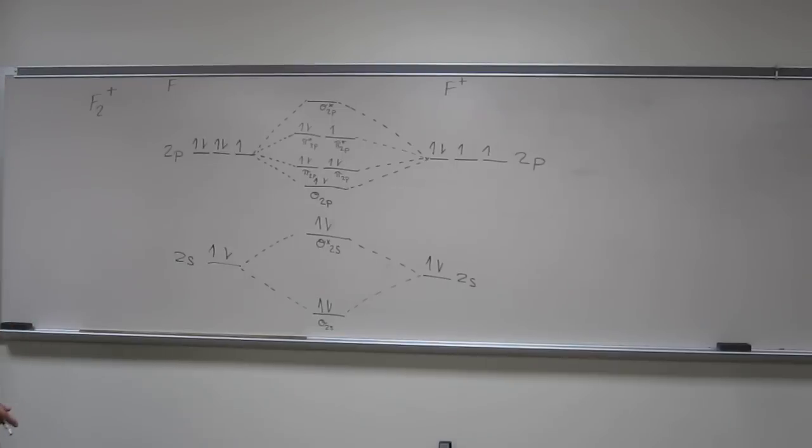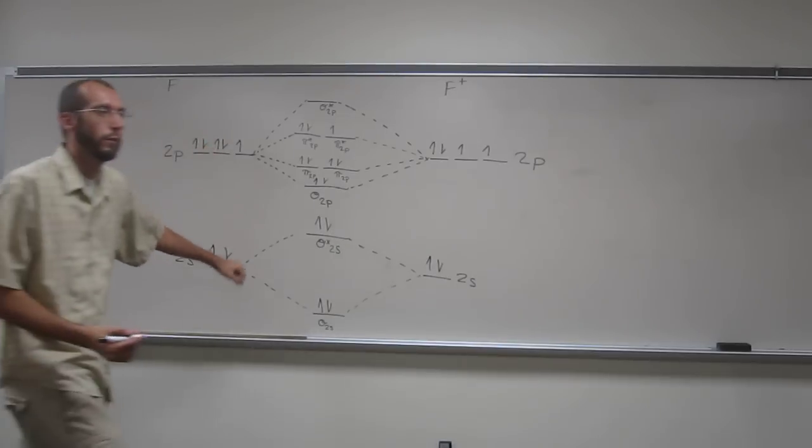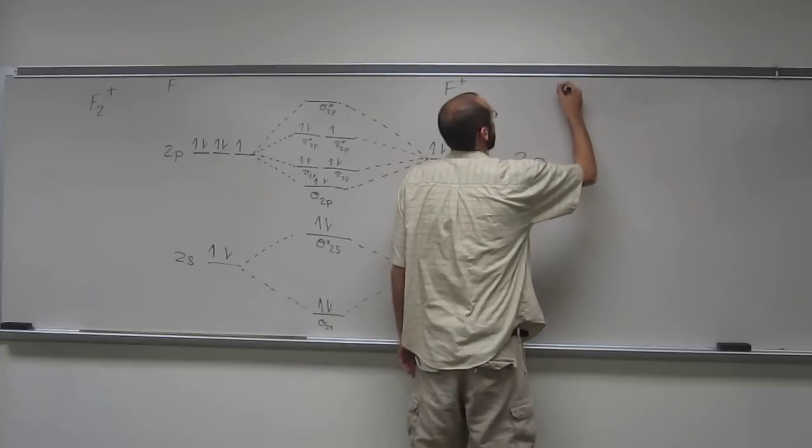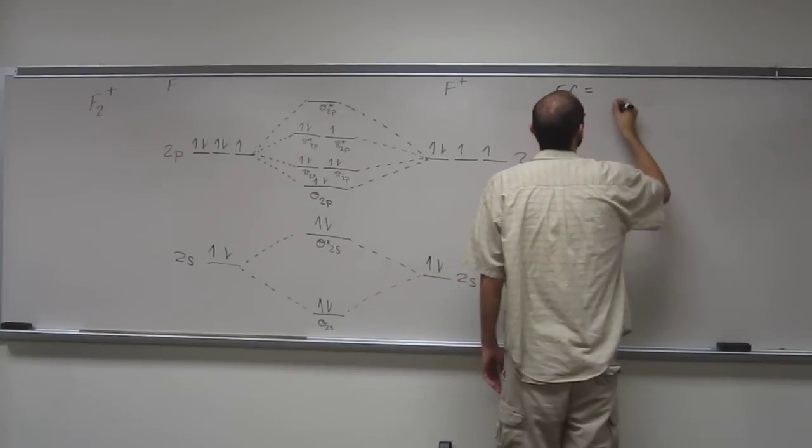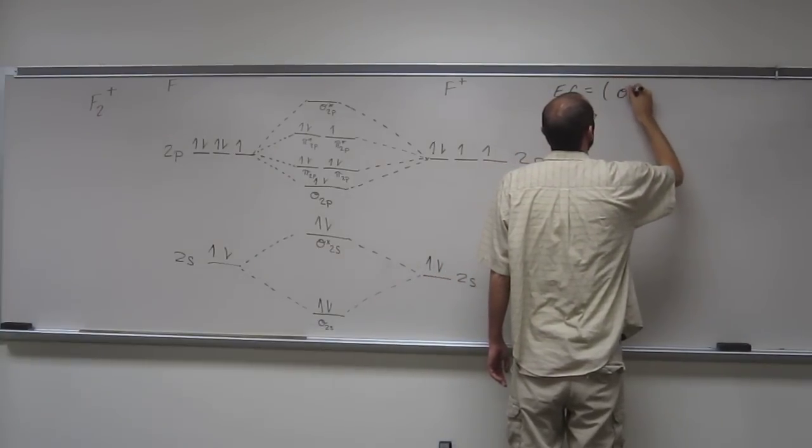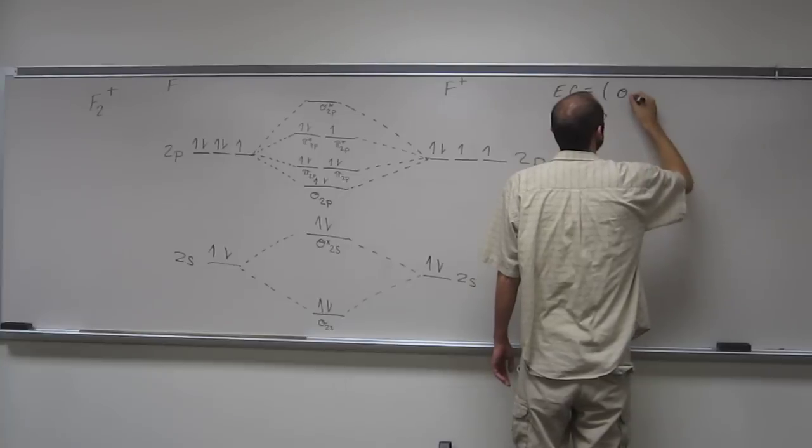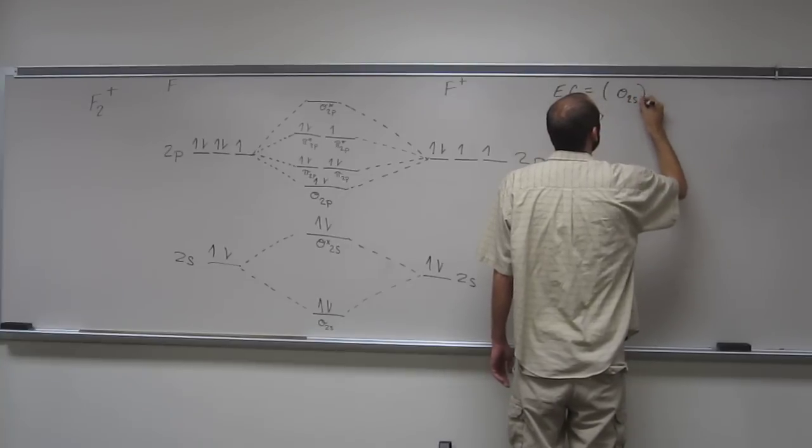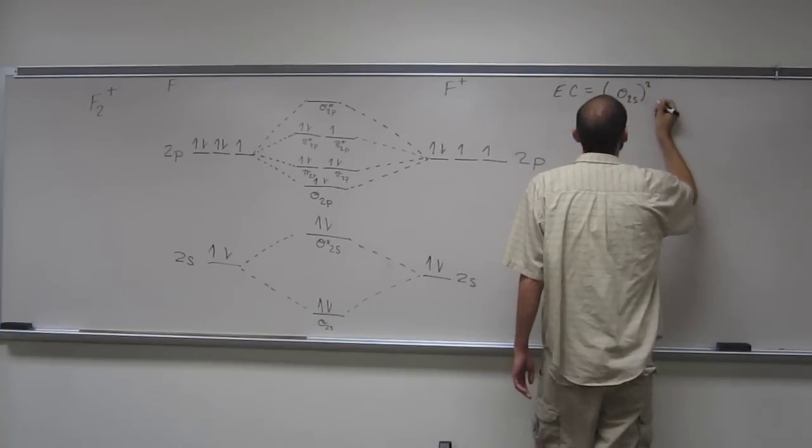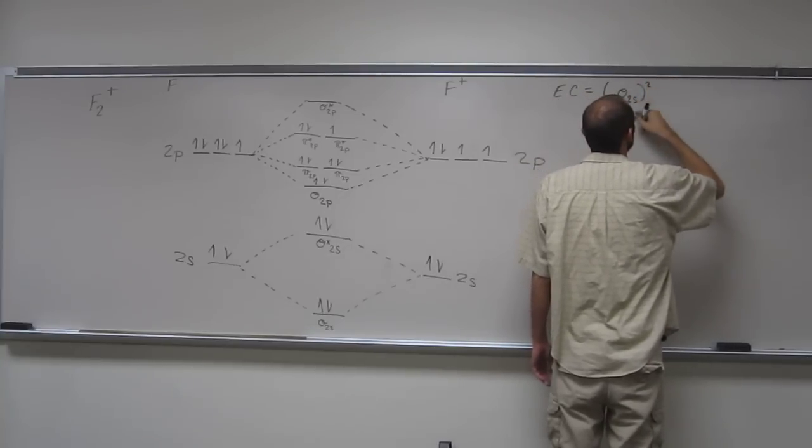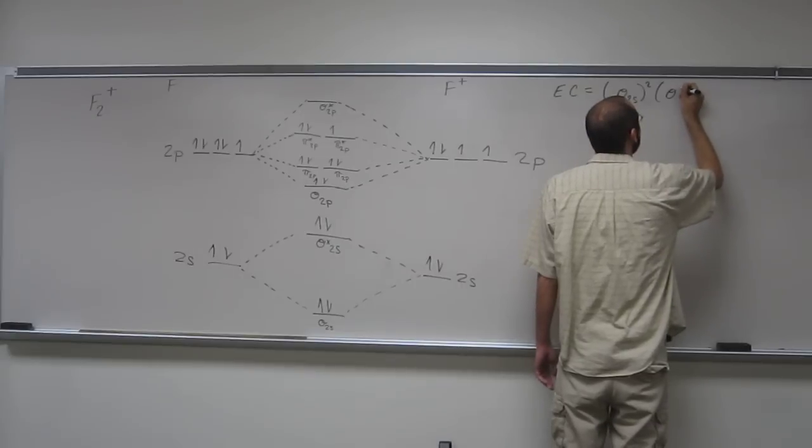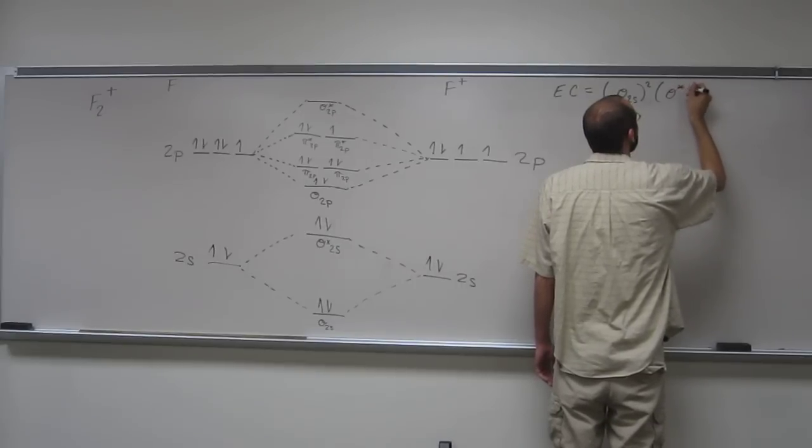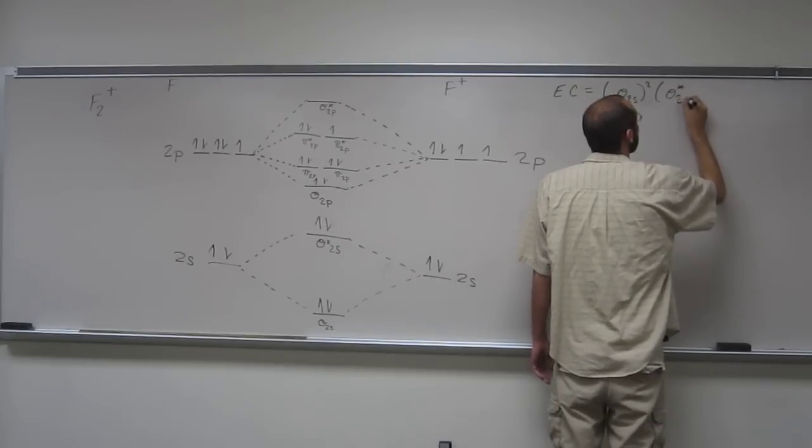So why don't we do the electron configuration first since it's right up there shown to us. So what's the electron configuration? So we just start from the bottom. And remember, put it in those parentheses. So sigma star 2... sigma 2s, sorry, sigma 2s2.